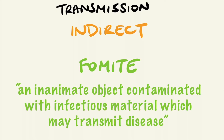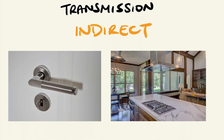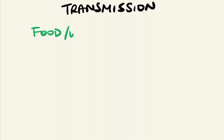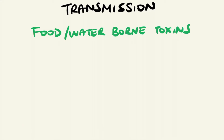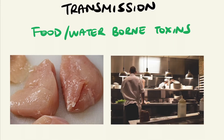For example, fomites can be common objects such as door handles or kitchen countertops. They can also be foodborne or waterborne toxins. Infections can also be potentially contracted via contaminated food or water sources, due to poor food handling, poor hygiene, or drinking contaminated water.